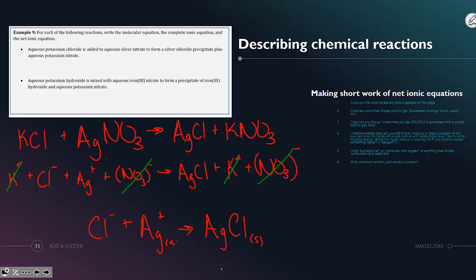So the net ionic equation would be that chloride and silver form insoluble silver chloride. If you really wanted to go above and beyond, you could label their states of matter. But this is our net ionic equation for that first example.